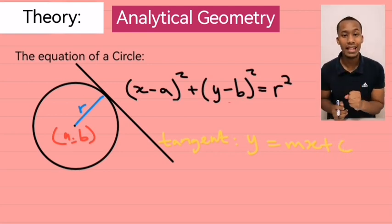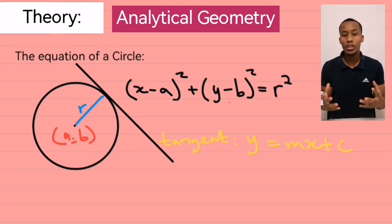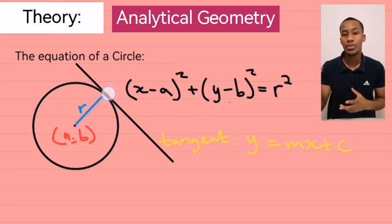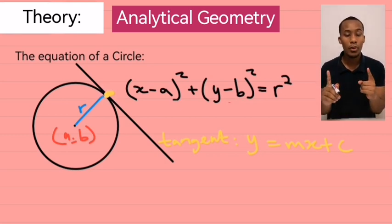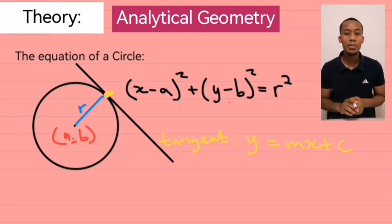Now, to find m, the gradient, we can't use the traditional gradient formula of y2 minus y1 over x2 minus x1. Because we are not given two points. In most cases, you'll only be given the one point.